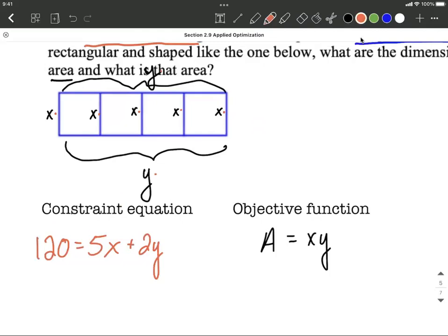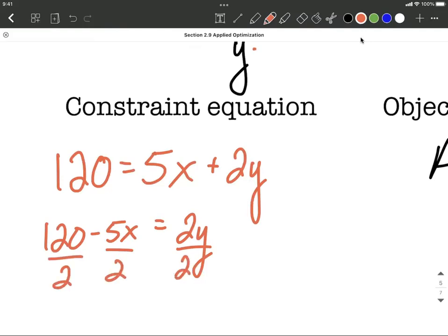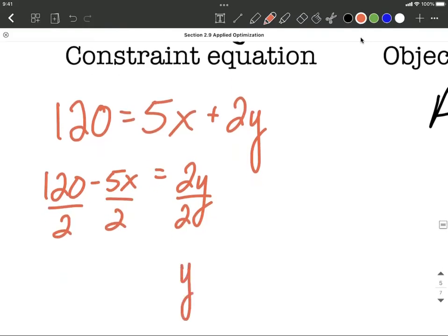Now I'm going to elect to get the y on one side by itself. So to do that, I would subtract five x, move it to the other side first, and then divide by two. I'm electing to divide each individual term by two, but you could have divided the entire side by two and that would have been okay as well. 120 divided by two makes 60, minus five x over two.